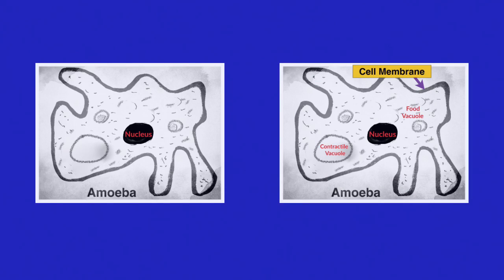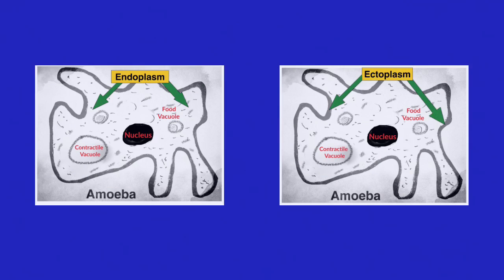In all diagrams of the amoeba, please make sure you reference the cell membrane, the nucleus, the food vacuoles, and that large contractile vacuole. You should also note that the cytoplasm is made up of ectoplasm and endoplasm.